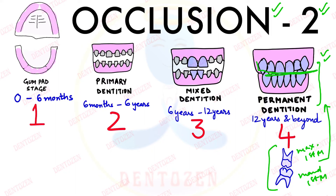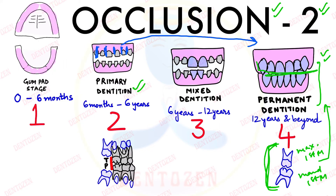But this molar relationship further depends upon the primary dentition — two factors in primary dentition. First is the presence of physiological spaces in primary dentition, much required so that larger permanent teeth can use those spaces and get properly aligned. Second is the terminal plane relationship — that is, the deciduous maxillary and mandibular second molars, how their distal planes are aligned with each other, because this distal plane is going to guide the erupting permanent first molars.